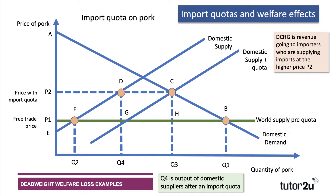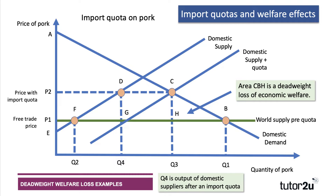Importers also get some revenue. Area D, C, H, G is the revenue going to importers — they're now selling quantity Q4 to Q3 at the higher price P2, so they get higher revenue, but they're limited in how much they can get. That area was previously consumer surplus, so it's effectively a transfer to overseas producers. This means that area C, H, B is the deadweight loss of welfare — the pure deadweight loss due to the import quota.